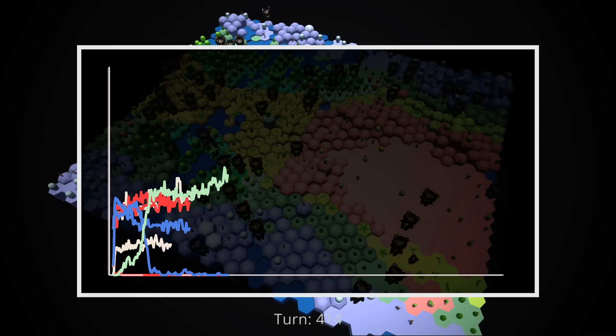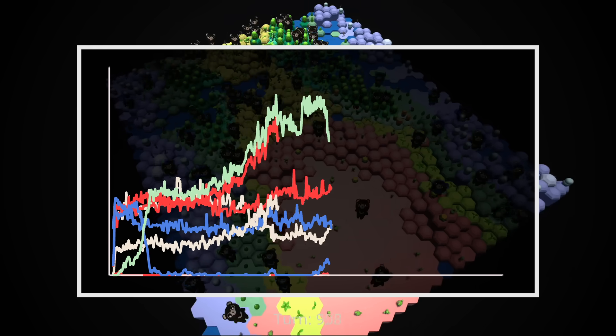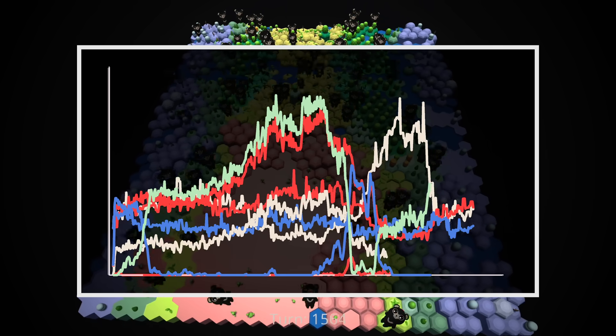Each time a creature reproduces, there's a 1 in 3 chance of a mutation occurring. A mutation will cause one stat to move up or down by up to 30%. The stats that can change in this simulation are size, speed, rate of reproduction, and diet.